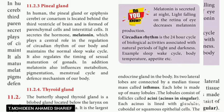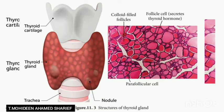In humans, the pineal gland, also called epiphysis cerebri or conarium, is located behind the third ventricle of the brain and is formed of parenchymal cells and interstitial cells. It secretes the hormone melatonin, which plays a central role in the regulation of the rhythm of our body and maintains the normal sleep-wake cycle. In addition, it regulates the timing of sexual maturation of the gonads. Melatonin also influences metabolism, pigmentation, the menstrual cycle, and the defense mechanism of our body.